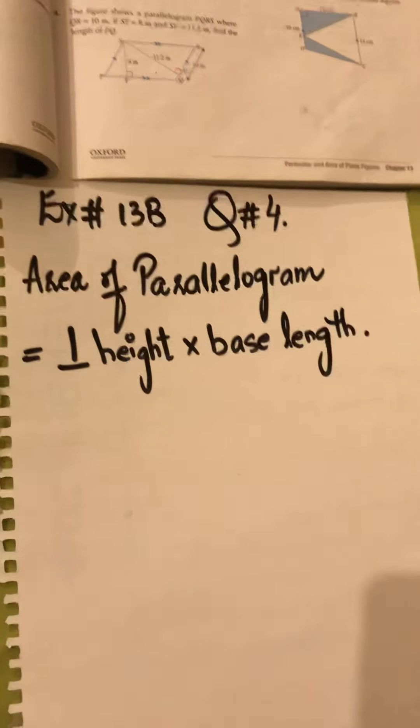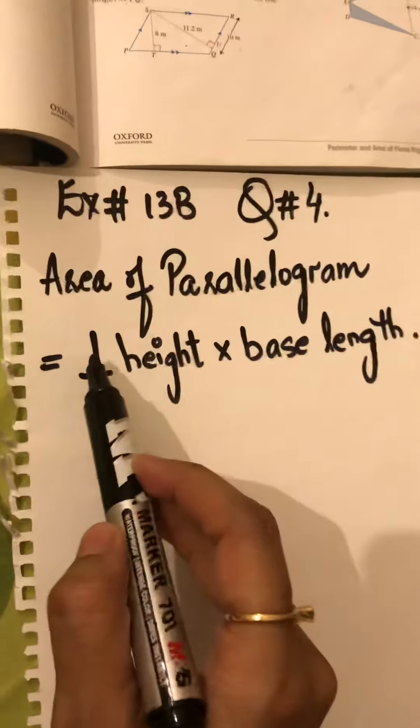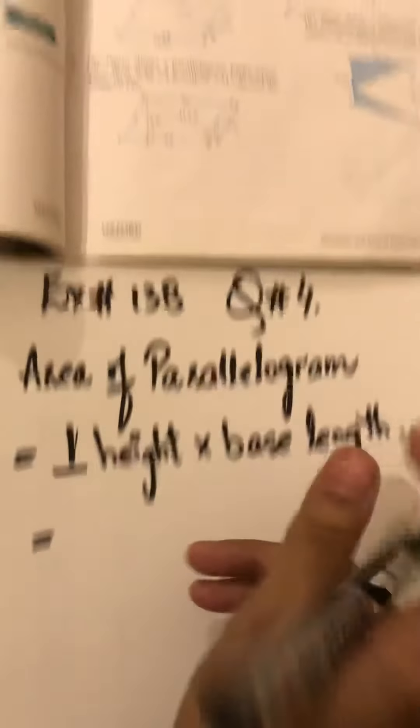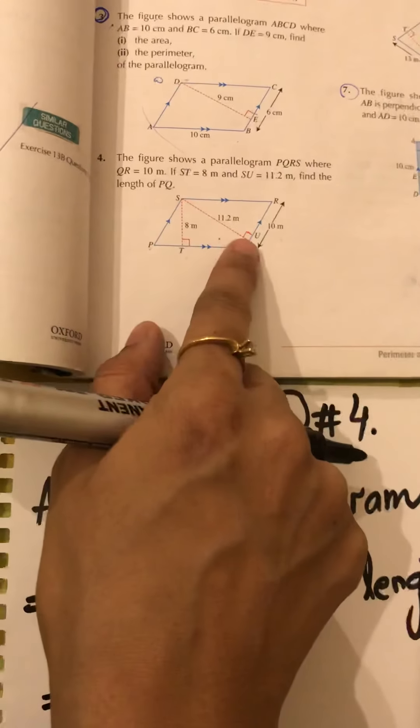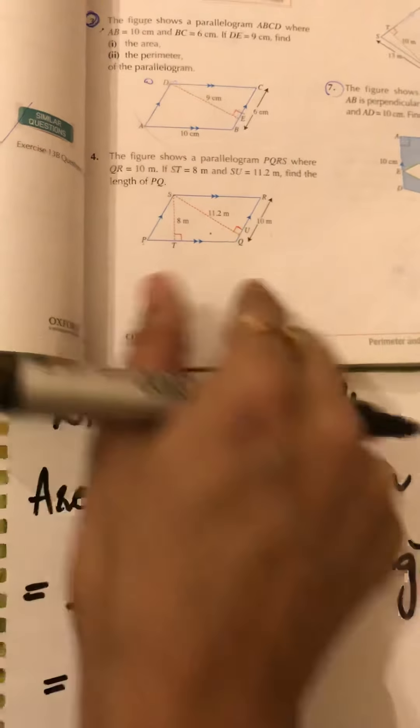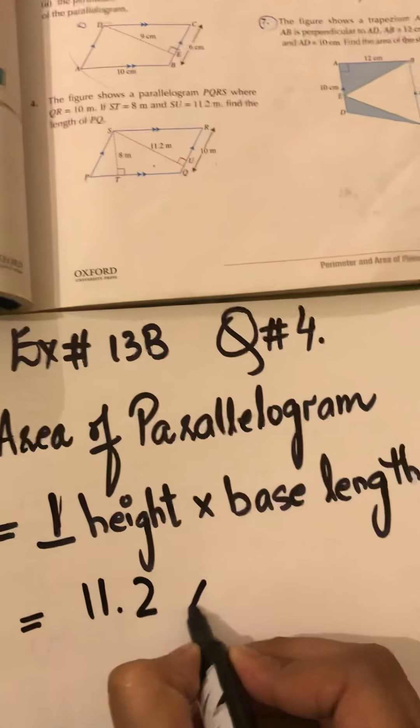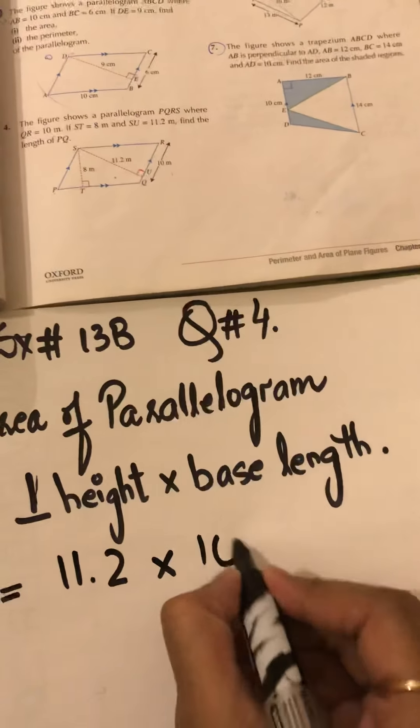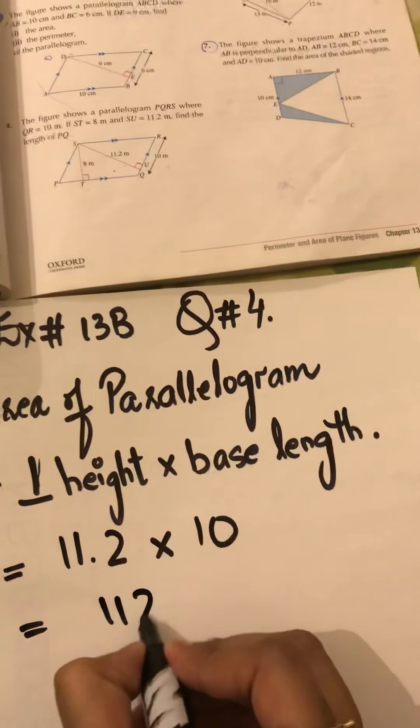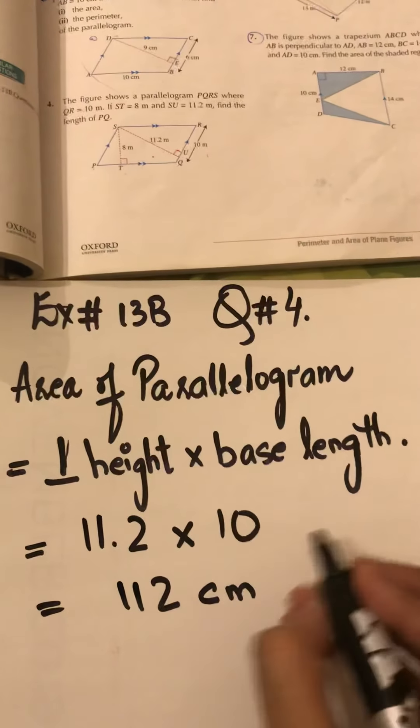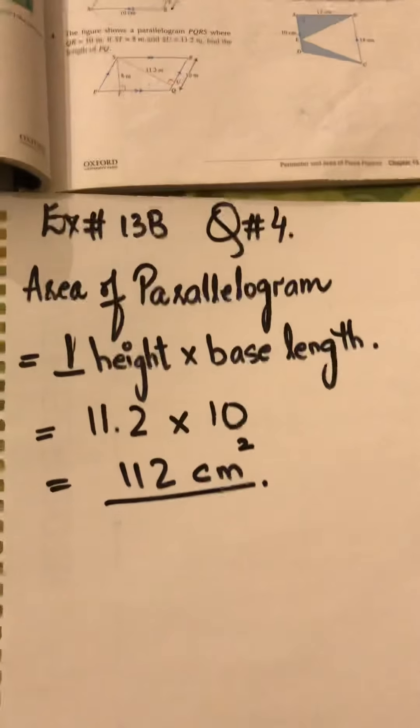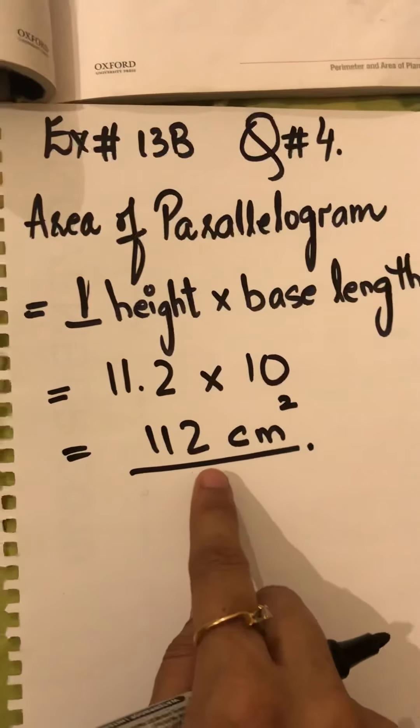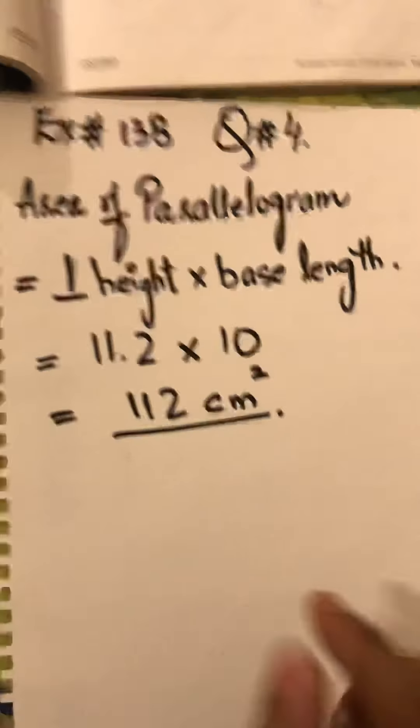As the area of parallelogram, the formula is perpendicular height multiplied by base length. So first of all, let's find out the area with the help of this 11.2 meter as the perpendicular height. With the help of this box, I can evaluate that this is the perpendicular height and the base length is 10 meters QR. Therefore, 112 centimeter square is actually the area of the parallelogram.